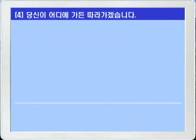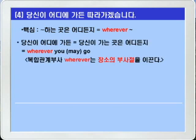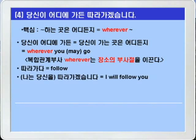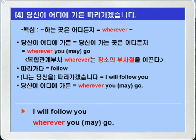4번. 당신이 어디에 가든 따라가겠습니다. 이 영작의 핵심은 '뭐뭐라는 곳은 어디든지'를 복합관계부사 wherever를 써서 나타내는 것입니다. '당신이 어디에 가든' — wherever you may go 혹은 wherever you go. 조동사 may를 쓰면 문어체 표현이 됩니다. 복합관계부사 wherever 이하가 양보의 뜻을 나타내는 장소의 부사절을 이끄는 경우가 되겠습니다. '따라가다'는 follow를 쓰면 되죠. 'I will follow you wherever you go' 혹은 'I will follow you wherever you may go.'